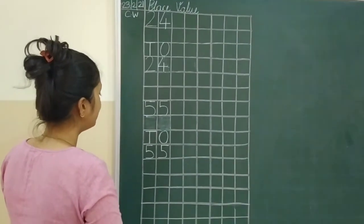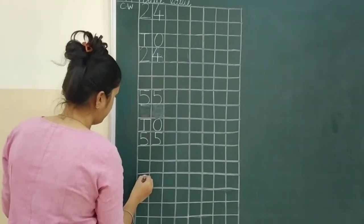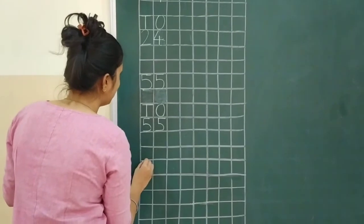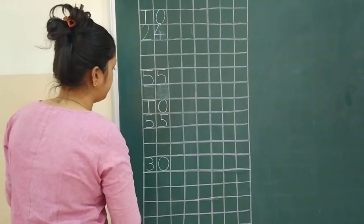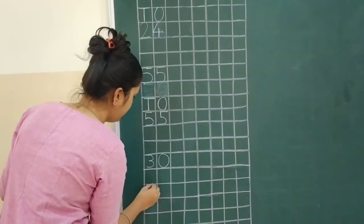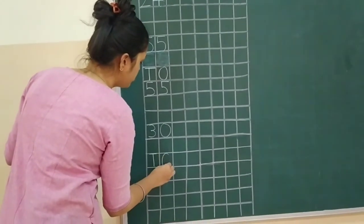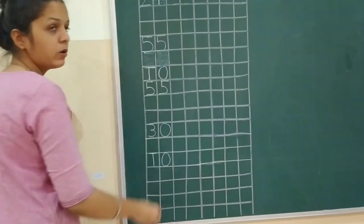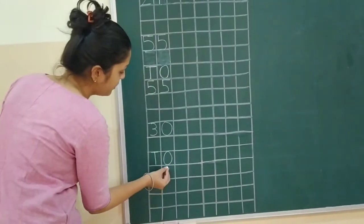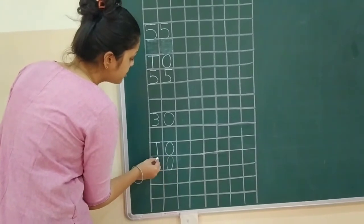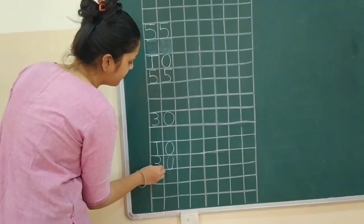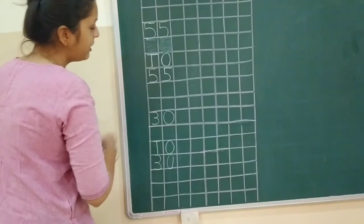Let's see the next number. We will write over here, that is 3, 0, 30. Let's write T, O. So, first we write 1. Okay, so let's write over here 0, and in the tens place we write 3. 3, 0, 30.